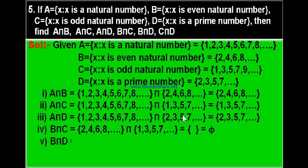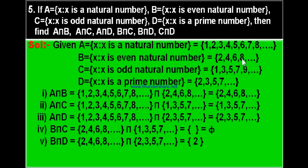Fifth part: B intersection D. Set B = {2, 4, 6, 8, ...} intersection set D = {2, 3, 5, 7, ...}. If you observe both sets, only 2 is the common element. Therefore B intersection D equals {2}.